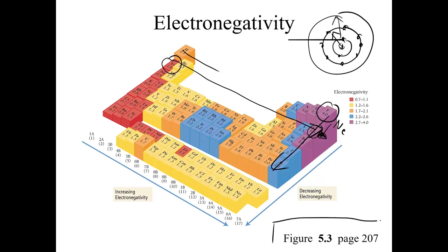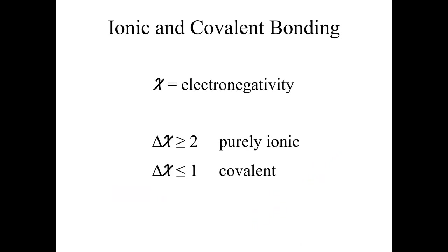This is from your book, figure 5.3, page 207. So this comes actually from chapter 5, but electronegativity was brought up already. What happens is, if the electronegativity difference between two elements is high, then we have a purely ionic compound. If chi is electronegativity, if the difference in electronegativity is larger than two, it's purely ionic. If it's less than one, it's purely covalent. But if it's in between, it's also covalent but it's called polar covalent.